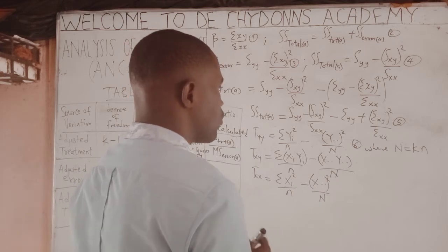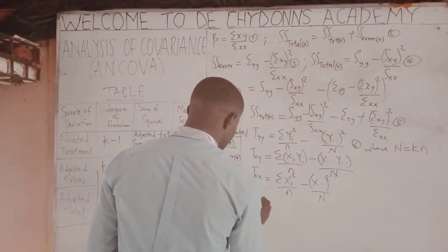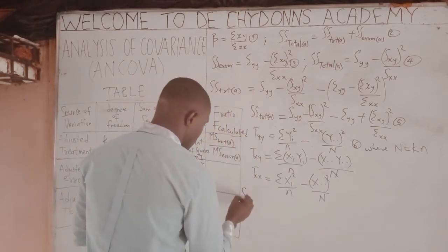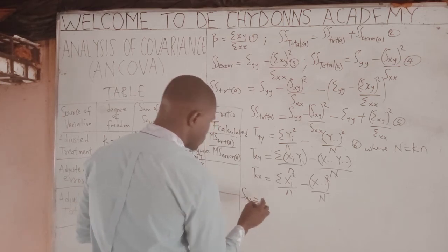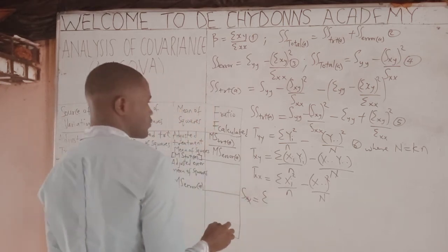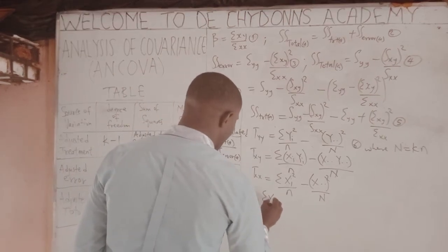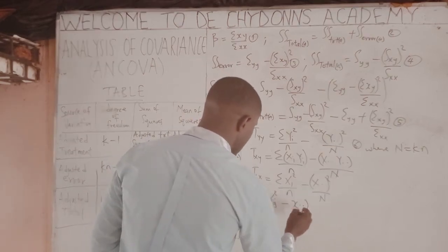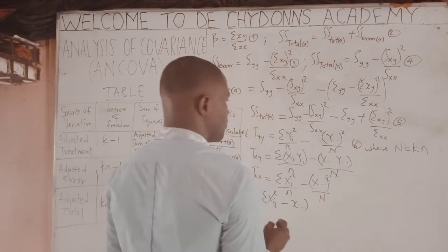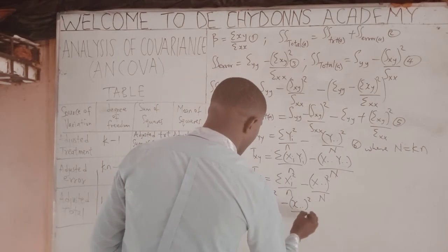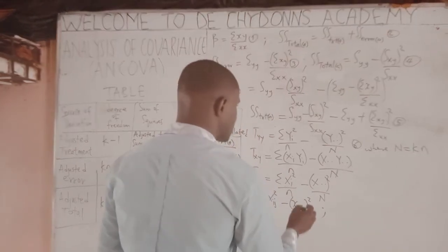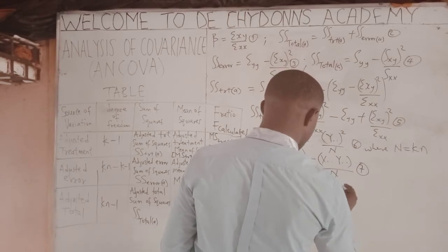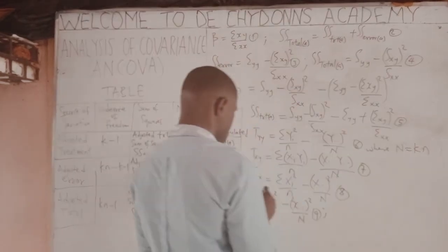Then TSxx equals the summation of xi squared over n minus x-bar squared over N, where N equals k times n. Then we go to SSxx, which equals the summation of xij squared minus x-bar minus the mean of x, all squared, over n. This is equation eight.